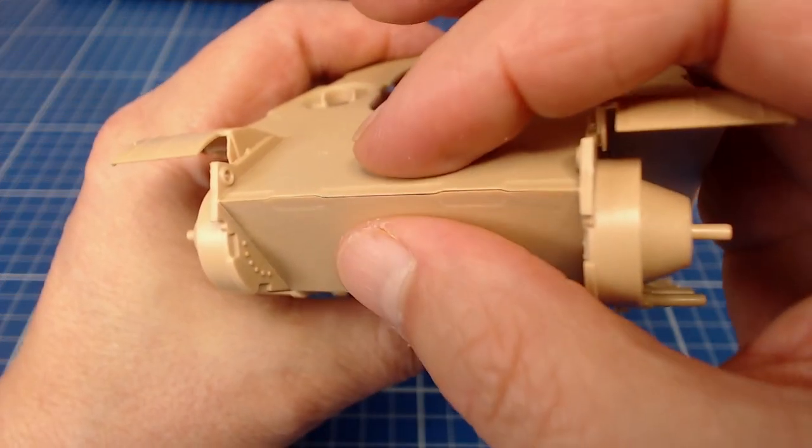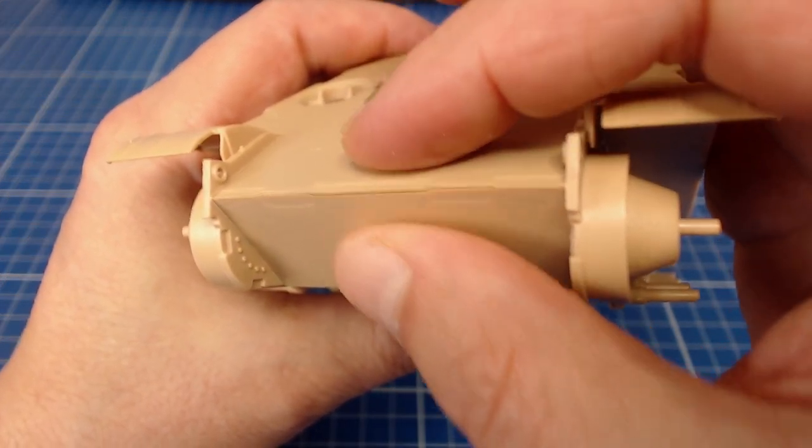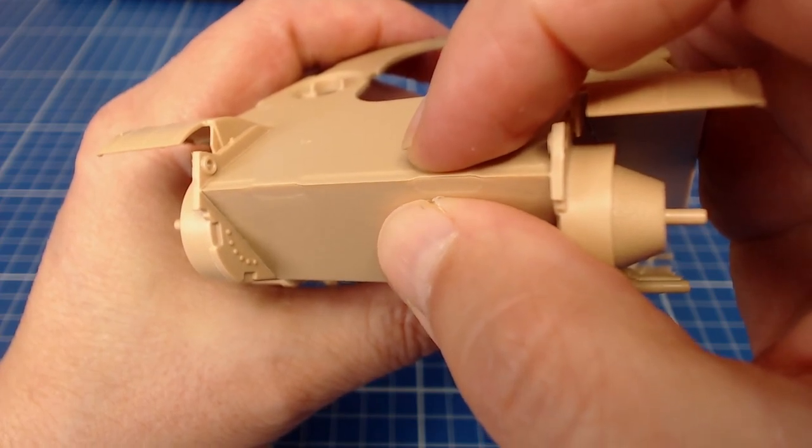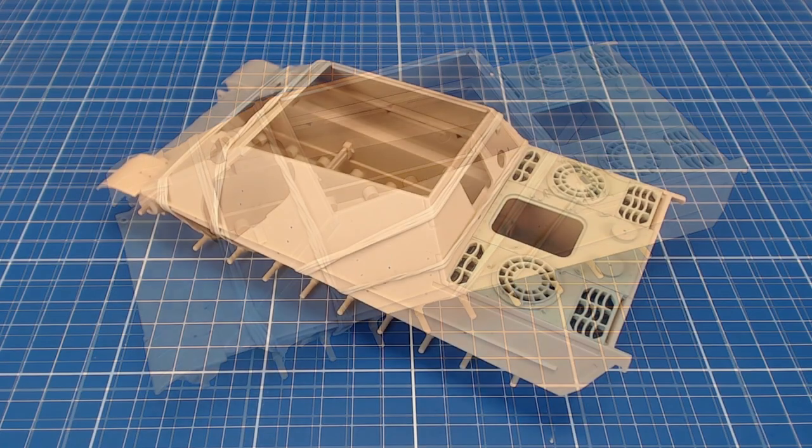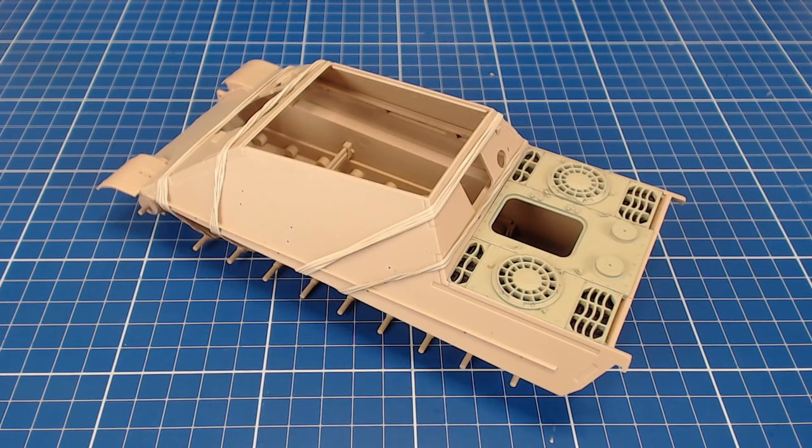The glacis and superstructure sides fit snugly over top the substructure. This dry fit shows how tightly the parts fit together. Once we glue and press the parts together, we'll have a tight joint. Elastic bands came in handy to hold the superstructure pieces together tightly as our glue dries.